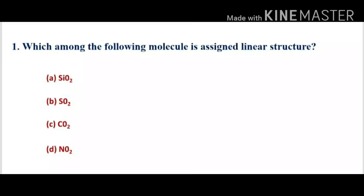Next, option B, SO2. It has three bond pairs and one lone pair. Due to three electron pairs, it has trigonal planar geometry. Due to the presence of one lone pair, the geometry gets distorted and it is a V-shaped structure.